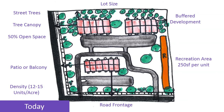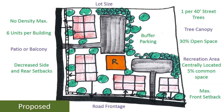For multifamily, we're looking at many of those same minimum requirements as with townhomes. The difference is that instead of buffering parking, the requirement is to buffer the development itself. There's additional recreation area required, a patio or balcony per unit required, and the density is higher — from 7 to 12 to 15 units per acre depending on the amount of open space provided. What's being proposed is similar to townhomes: removing density maximums and using units per building or front setbacks to guide development, decreasing side and rear setbacks, buffering parking instead of the development, and lessening open space to 30% but requiring a higher quality, common, recreational, and centrally used space.